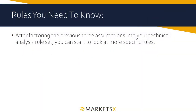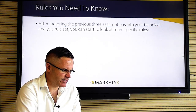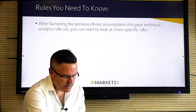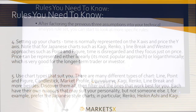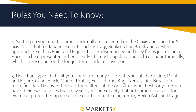After factoring in those three pillars, we can look at more specific rules. Rule four: setting up your charts — time is normally represented on the x-axis and price on the y-axis. Many of those Japanese charts and even some Western ones like point-and-figure disregard time and just focus on price. This can be represented either linearly or logarithmically — the logarithmic approach helps the more long-term investor; most charts are set up linearly.